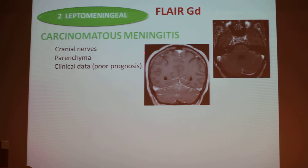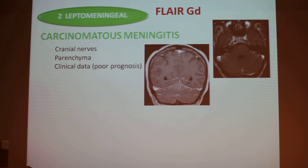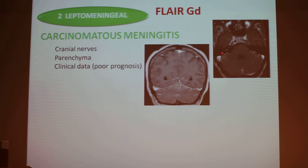Leptomeningeal carcinomatosis is a big cause of leptomeningeal uptake. The contrast enhancement is seen on cranial nerves or parenchyma. Clinical data is very important. It is very seldom that a cancer begins with leptomeningeal signs — generally it is the end of the cancer. The prognosis is very poor. You have contrast uptake of all the leptomeningeal space and of the cranial nerves.